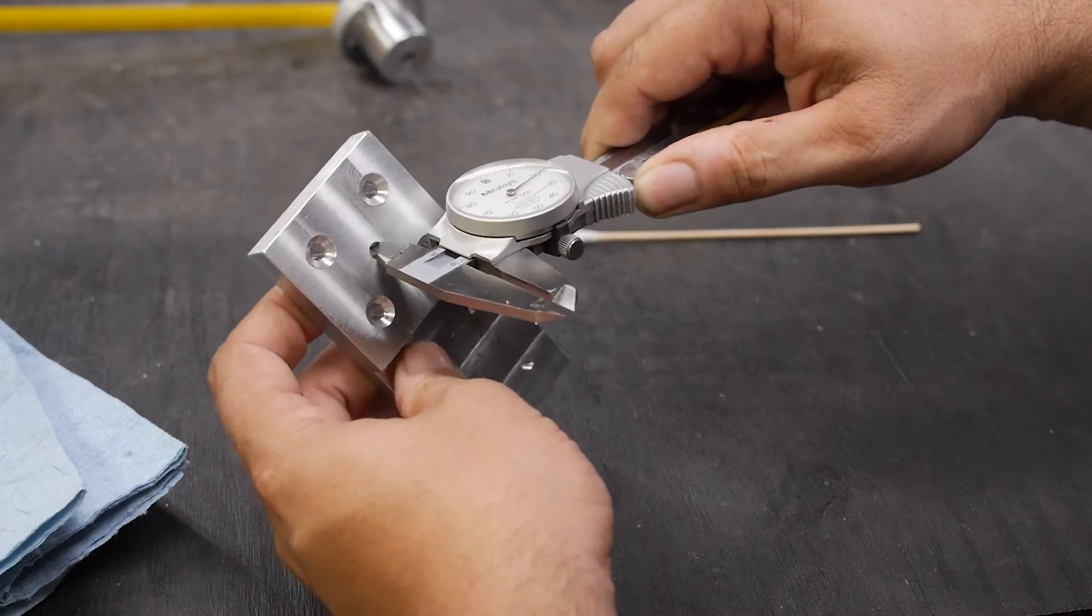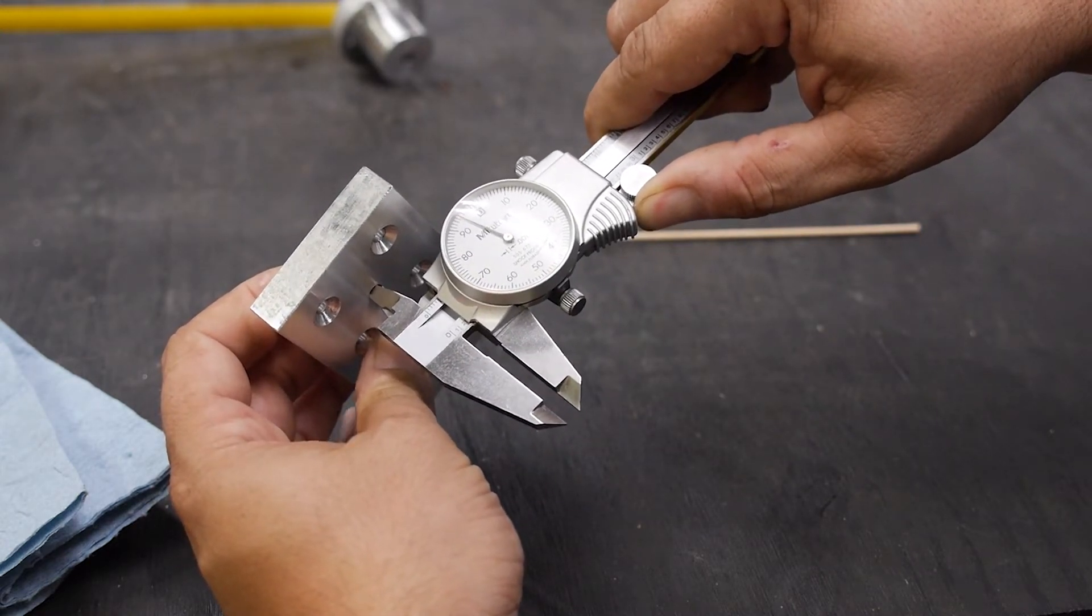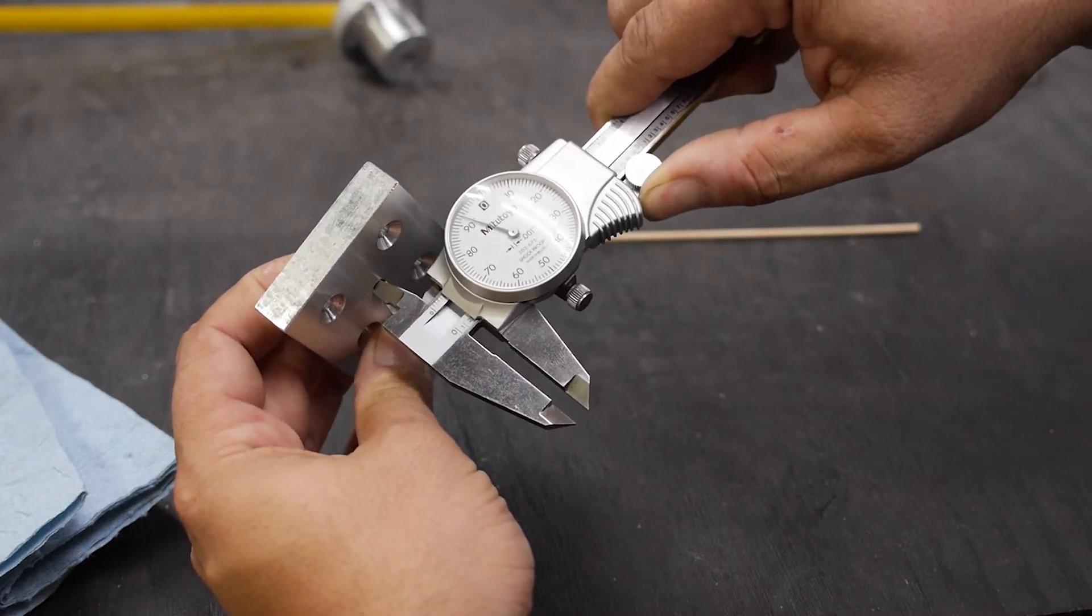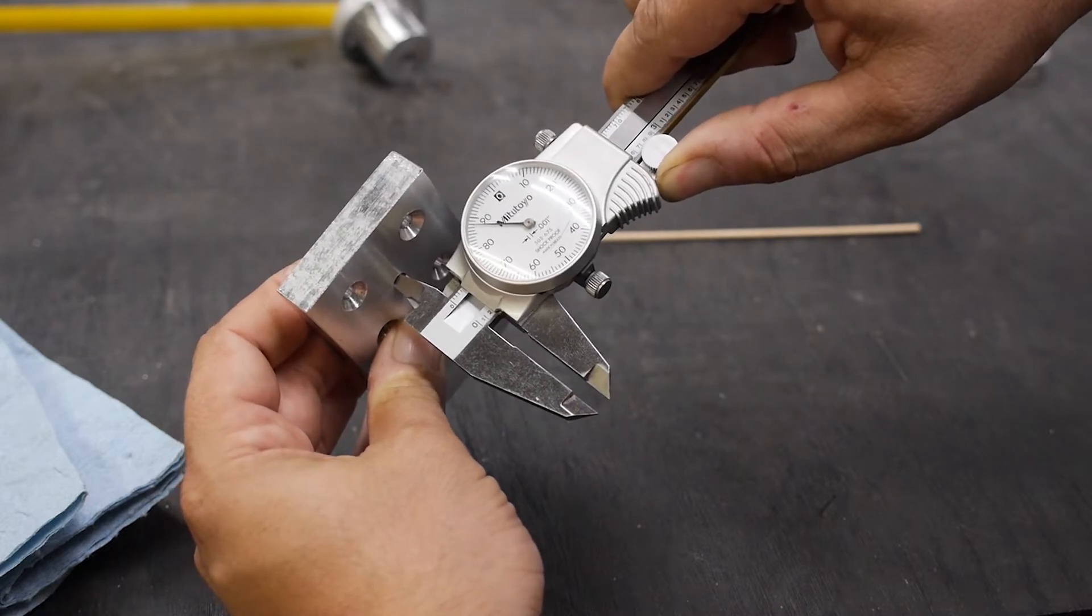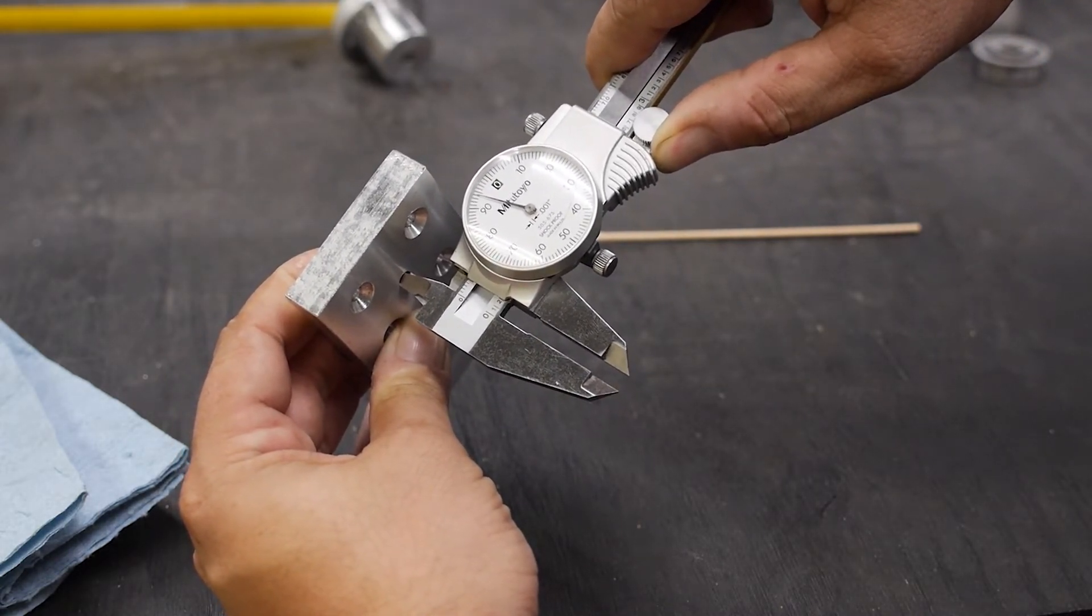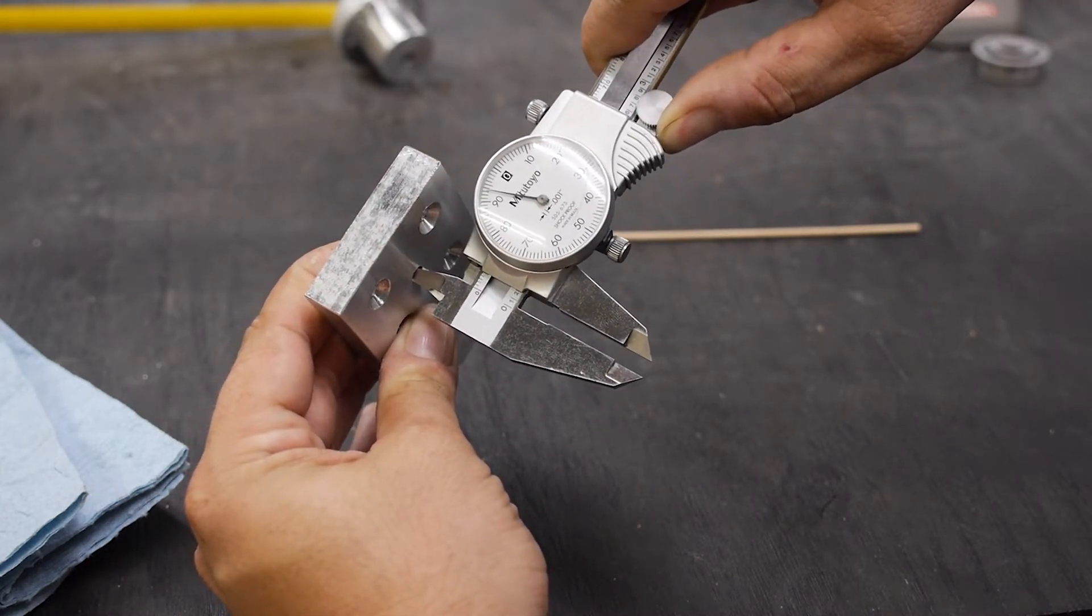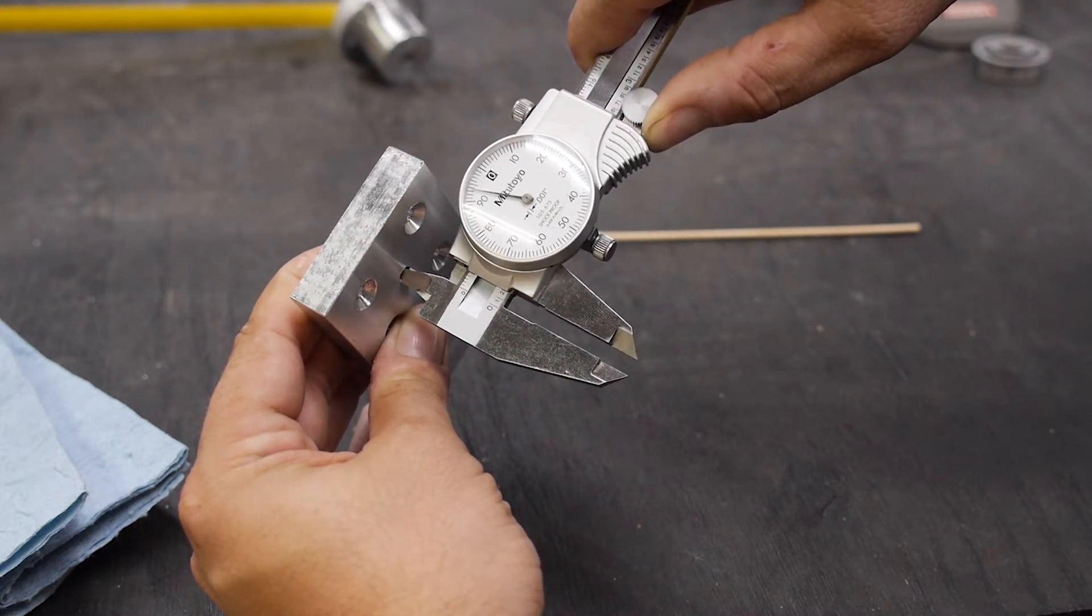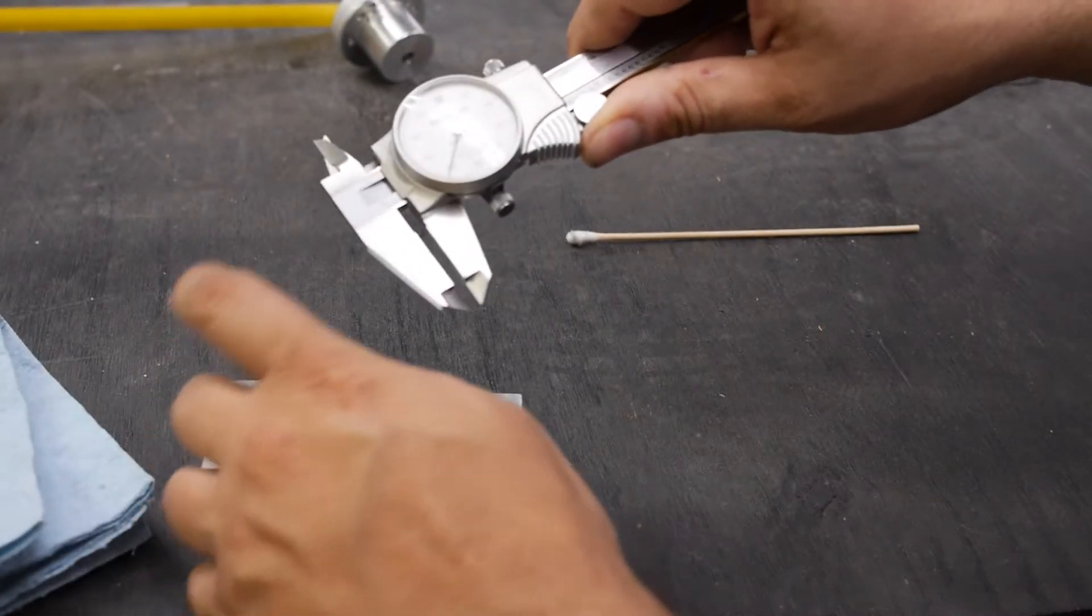I'll insert the internal jaws into the hole. And now as I open the calipers, I can apply a light amount of pressure and rock the calipers. And you'll see the same thing happening where I'm able to use the dial to determine when the calipers are normal to the cylindrical hole surface. In this case, we're looking for the maximum value. And once we find it, we can record that value.